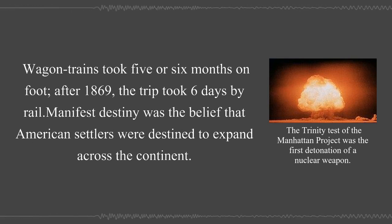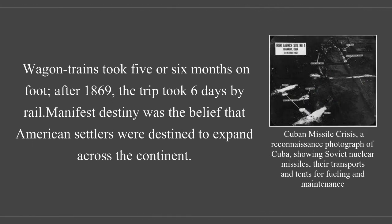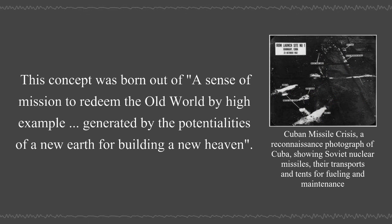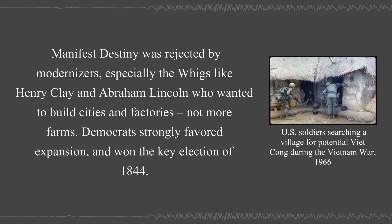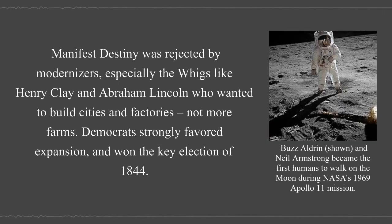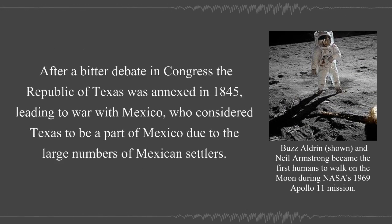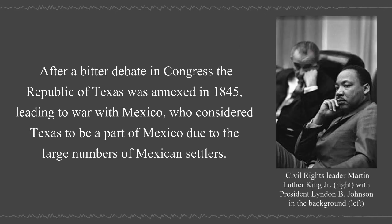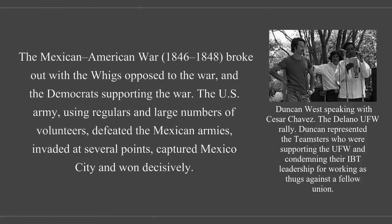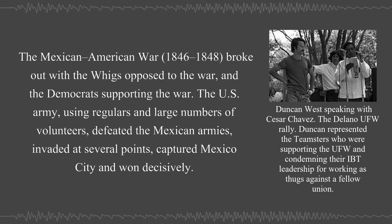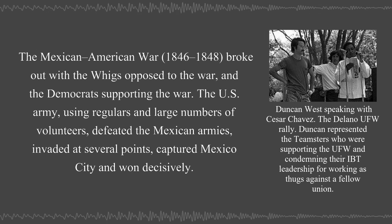Manifest Destiny was the belief that American settlers were destined to expand across the continent, born out of a sense of mission to redeem the old world by high example, generated by the potentialities of a new earth for building a new heaven. Manifest Destiny was rejected by modernizers, especially Whigs like Henry Clay and Abraham Lincoln who wanted to build cities and factories, not more farms. Democrats strongly favored expansion and won the key election of 1844. After a bitter debate in Congress, the Republic of Texas was annexed in 1845, leading to war with Mexico, who considered Texas to be a part of Mexico due to the large numbers of Mexican settlers.